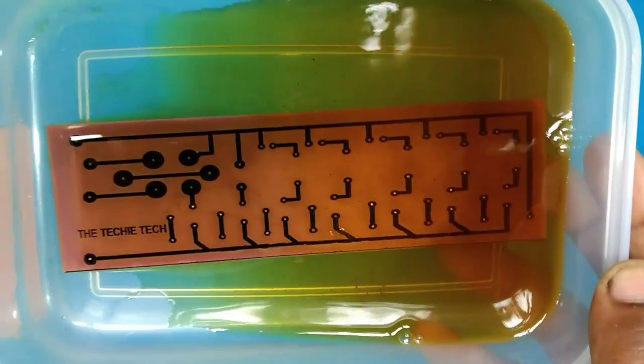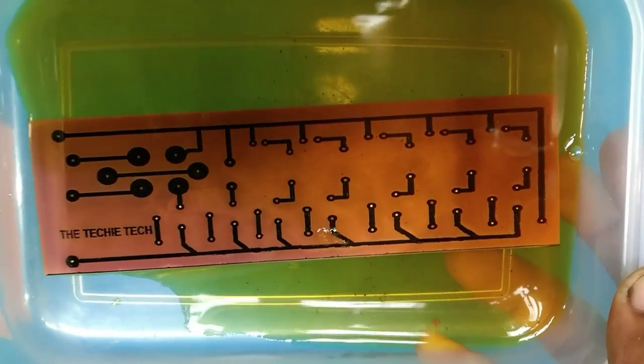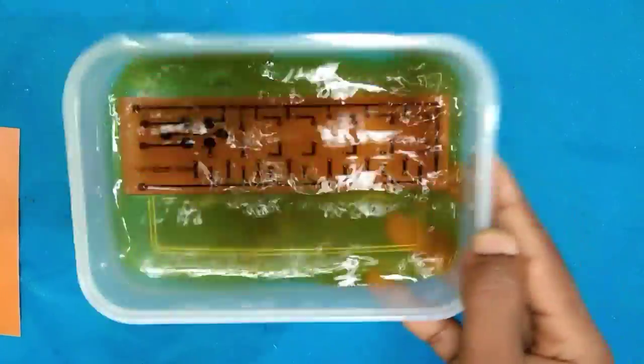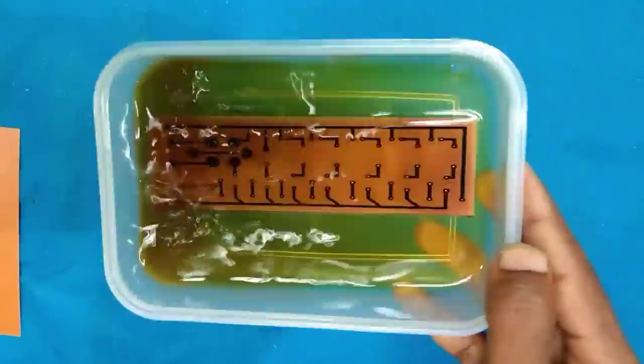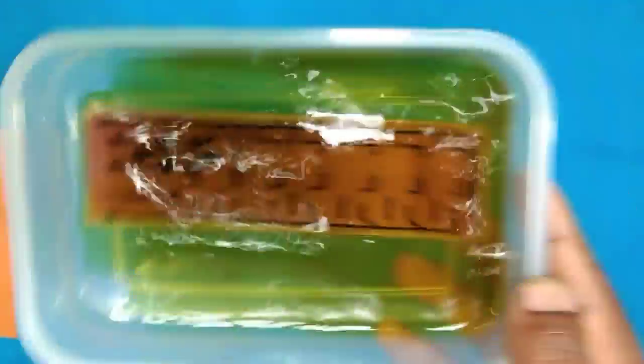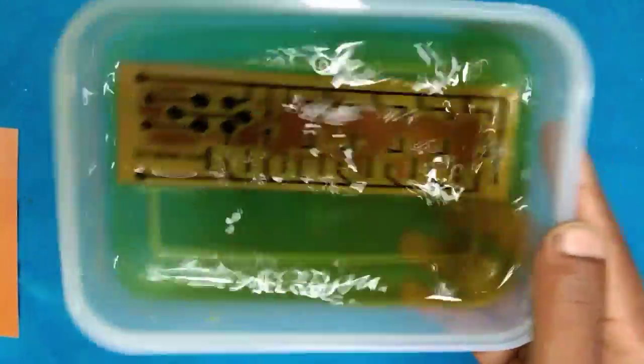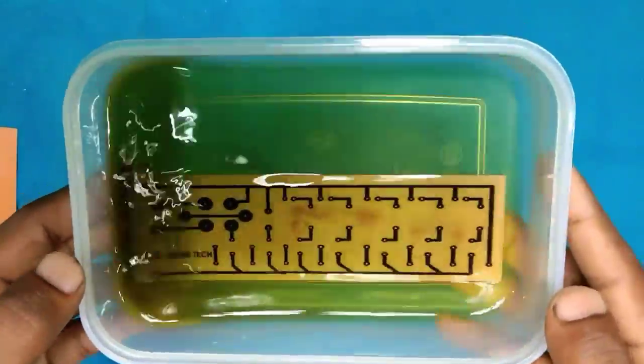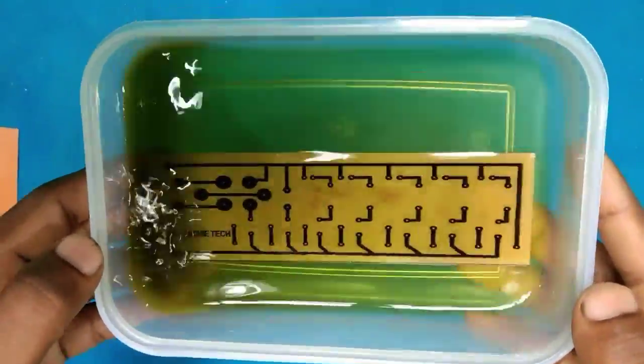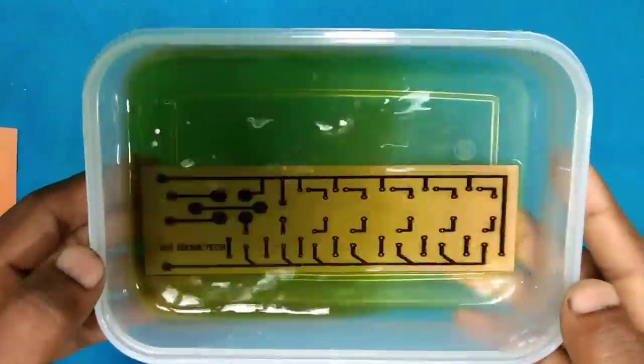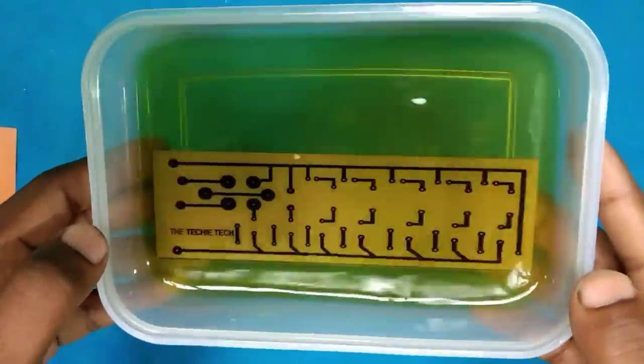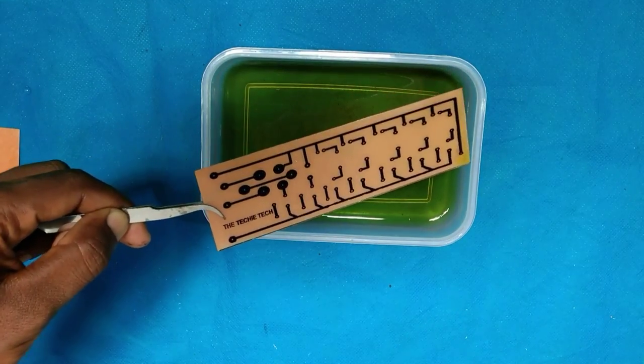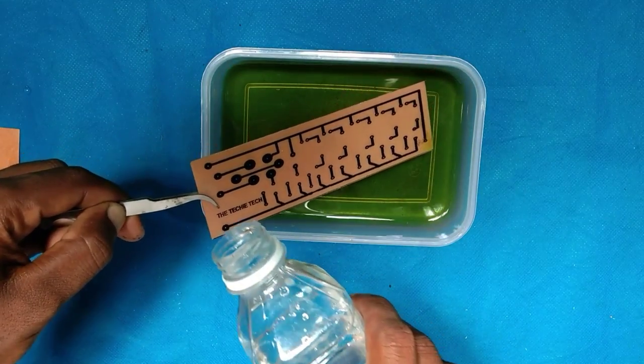After 2 minutes, you can see the solution changing color and the circuit board copper edges dissolving in it. Keep shaking the vessel. Now you can see the PCB is etched perfectly. We will wash it with water and let it dry.